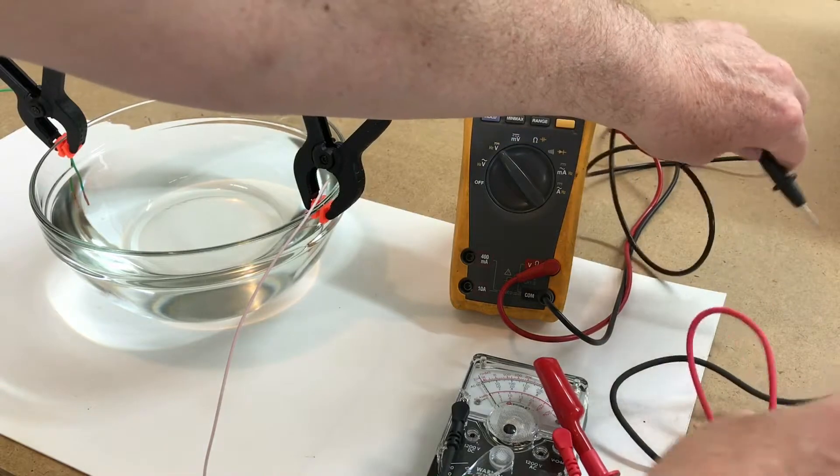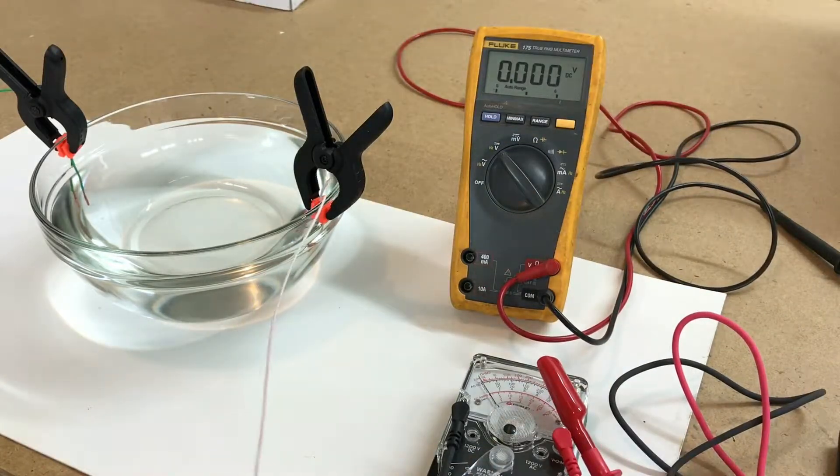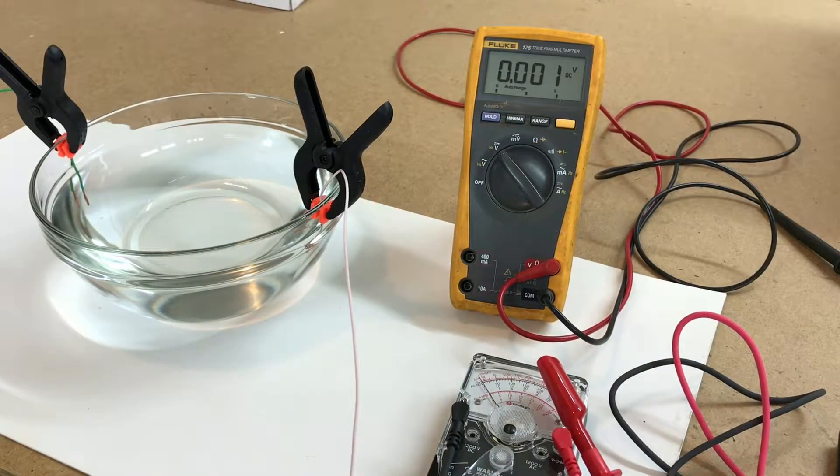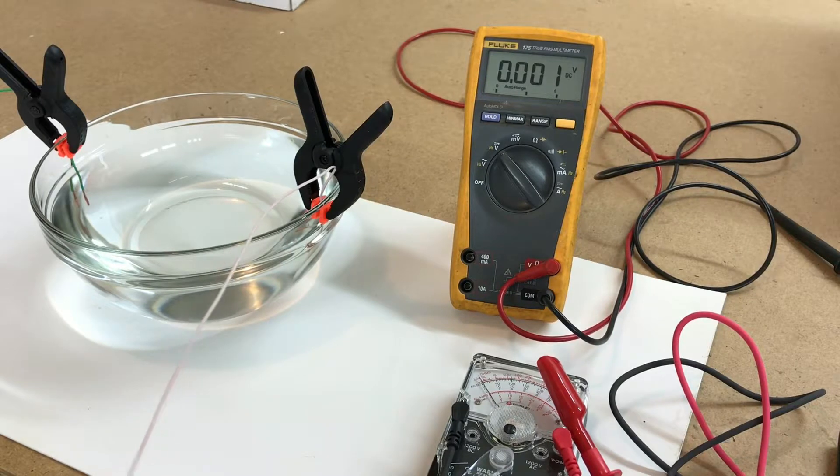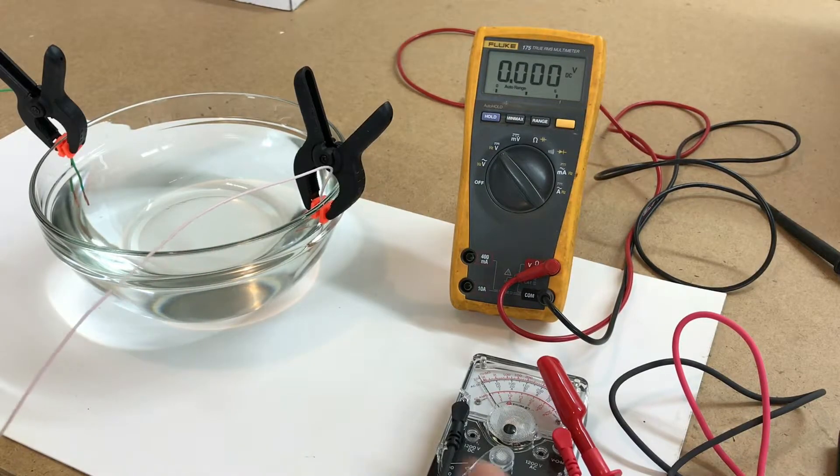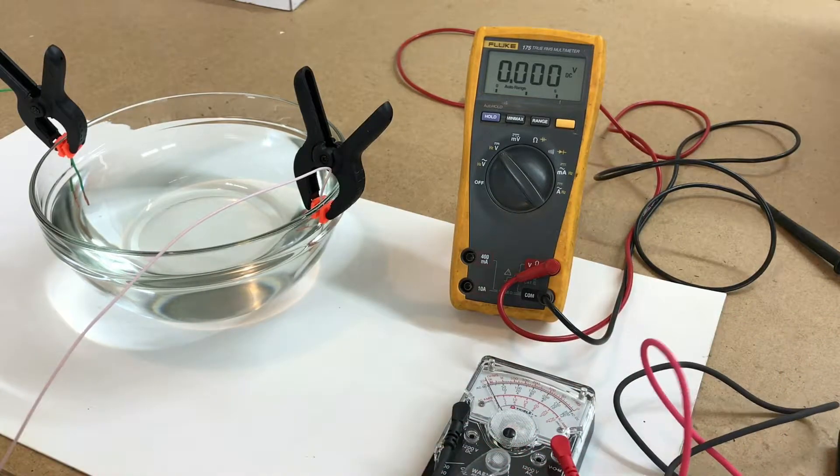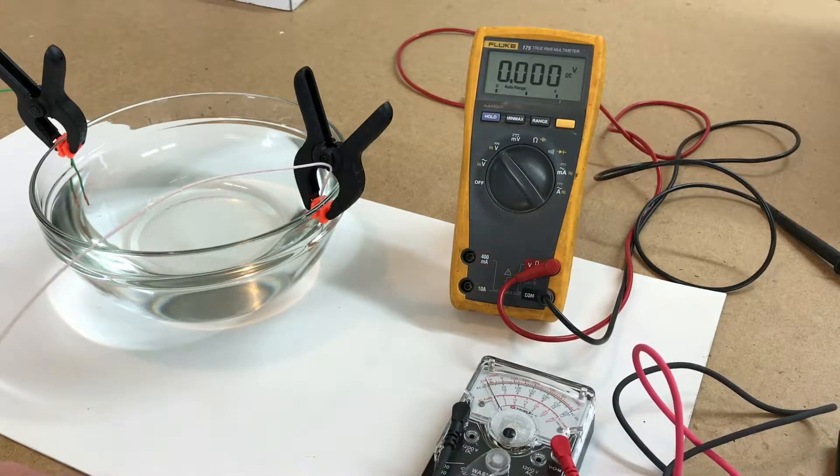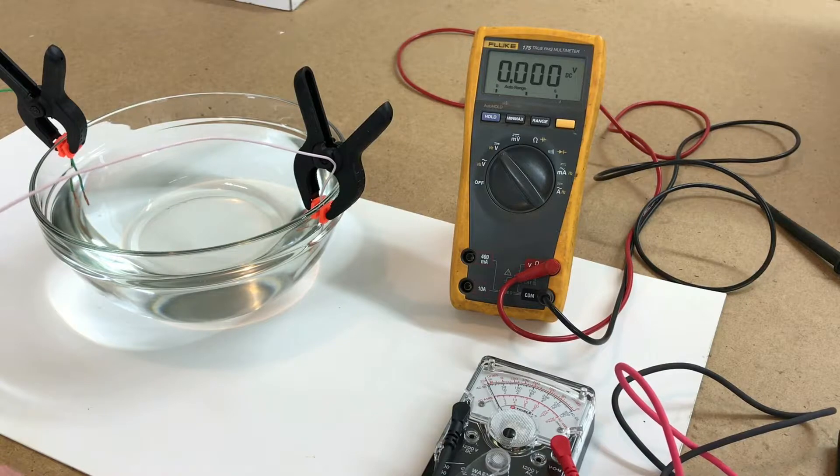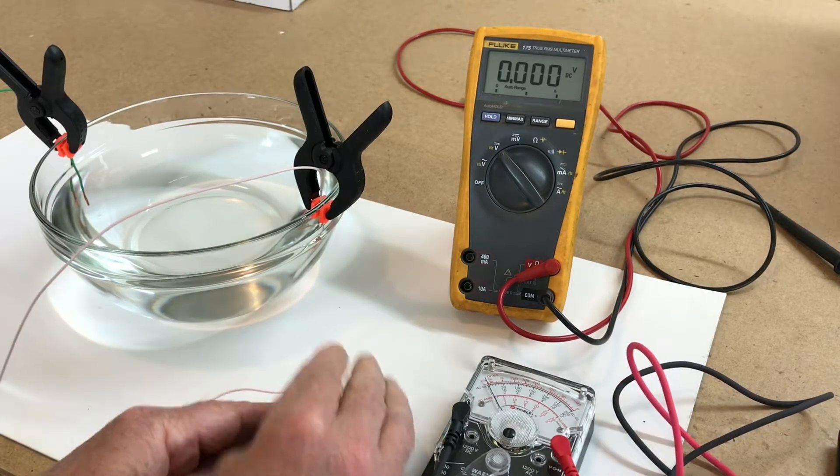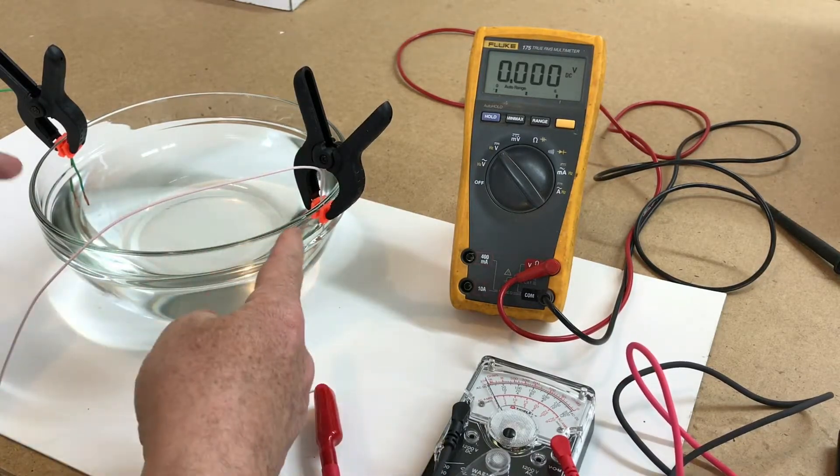So a good example, I got a little mock-up here. A lot of ground faults on fire alarm panels happen with water in junction boxes or devices. That's a high resistance ground because the circuit is being made through the water. If we take the meter and I got the wires in the water on both sides of the bowl.